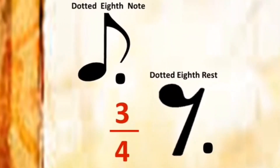These are the musical symbols of a dotted eighth note and a dotted eighth rest. Dotted eighth note receives three-fourths of a beat of sound and dotted eighth rest receives three-fourths of a beat of silence.